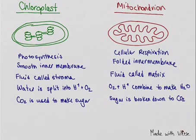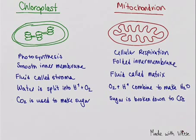In the chloroplast, water is split into hydrogen ions and oxygen gas, and in the mitochondrion, oxygen and hydrogen combine to make water.